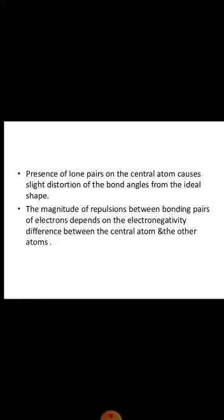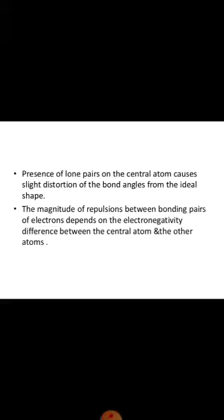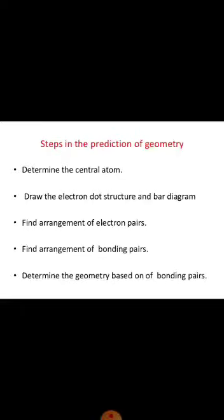Bond angle strain is caused by this deviation from the ideal angle. Also, increasing electronegativity of atoms bonded to the central atom changes the bond structure. If the atoms surrounding the central atom are highly electronegative, then the structure also changes. For example, we will study two molecules which both have three electron pairs, but the shape will be different. Why will the shape be different? The shape of the molecule depends on the nature and the number of electrons present in the central atom.